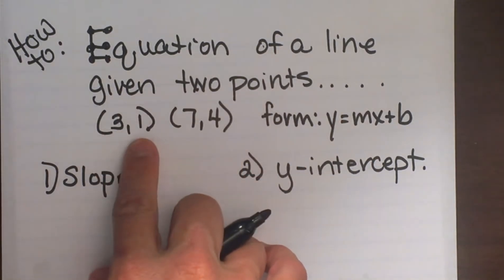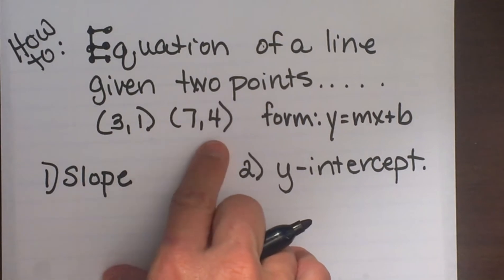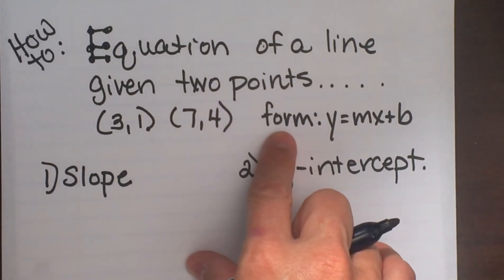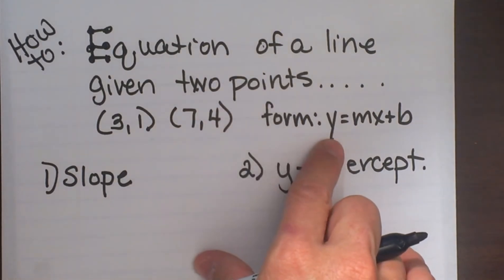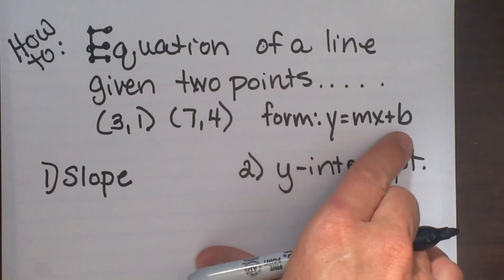So our two points are (3,1) and (7,4), and we're going to write the equation in the form y = mx + b, which is our slope-intercept form.